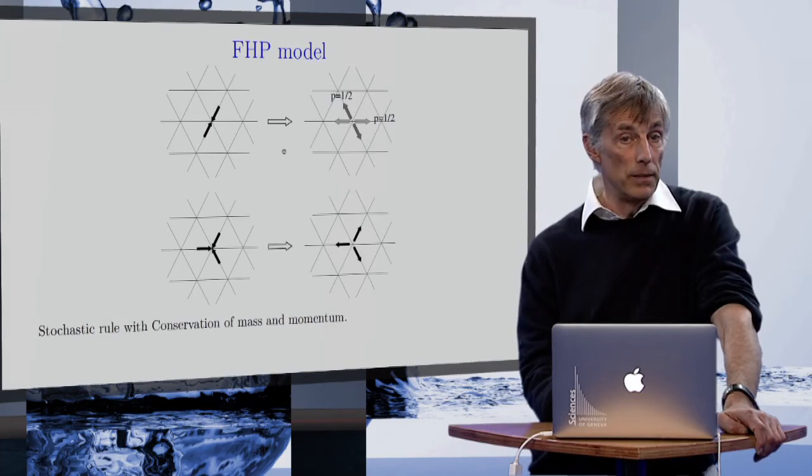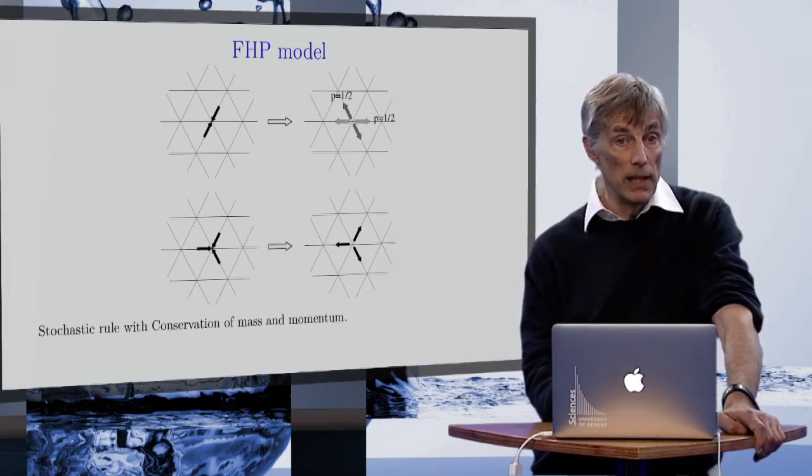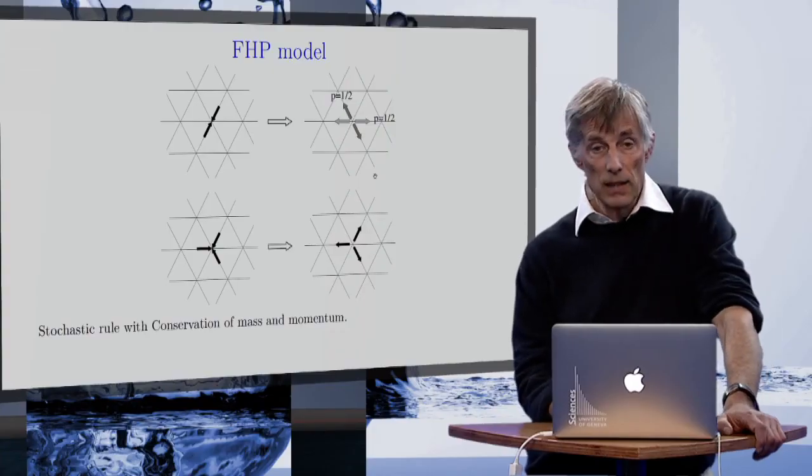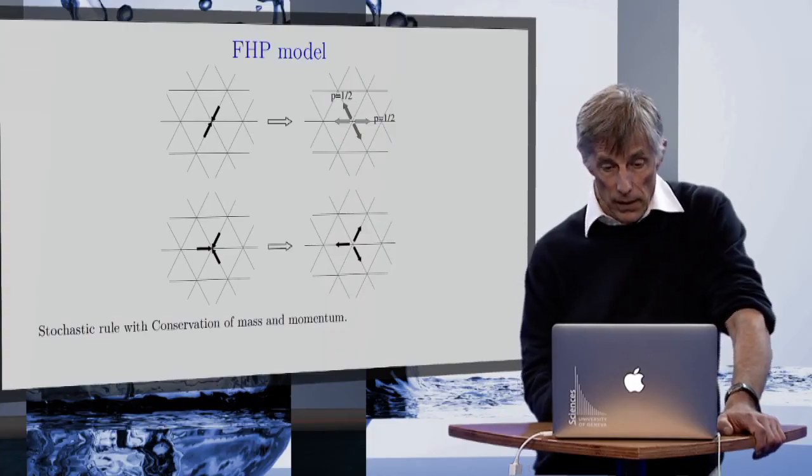First you need a lattice with more symmetry than the square lattice, so we go to this hexagonal lattice. Then when you have head-on collision you have probability to go this way or this way, so you choose that with probability one half in each case. You can also have a three-body collision like this which ends up by bouncing the particle this way, and you can also verify that this is mass and momentum conserving.